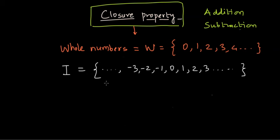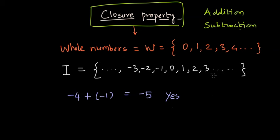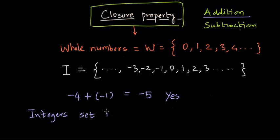Let's choose integers as a set first. Think of any two numbers — say minus four and minus one. Adding those gives minus five. Is minus five an integer? Yes. You can verify this for any two numbers, but it would take too long to check every combination, and that's why we have this property established: integers follow the closure property for addition. An elegant way to write this is that the integer set is closed under addition.